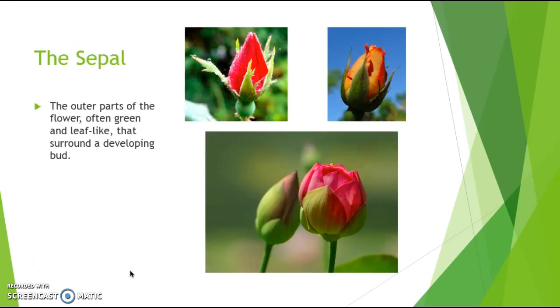The sepal is the outer part of the flower, like the outer bud. The bud happens right before the flower blooms — sometimes you have a little flower bud.